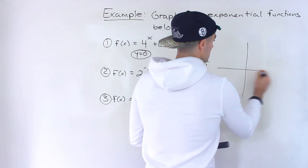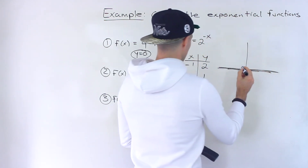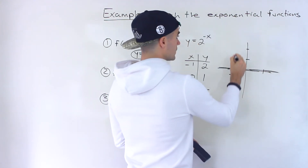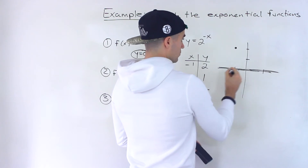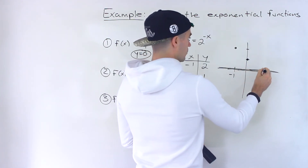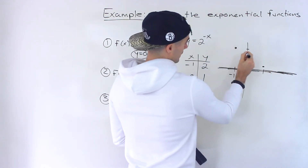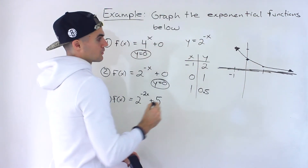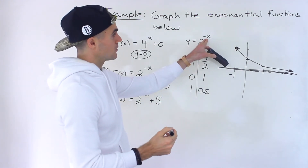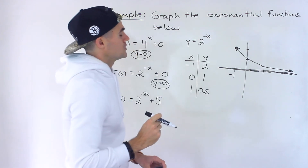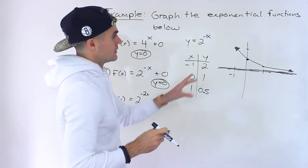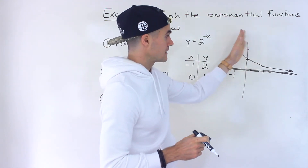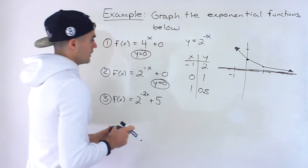Graphing these values with the horizontal asymptote at y = 0, we plot negative one and 2 up here, zero and 1 here, and one and 0.5 over here. Connecting these, the graph looks different from the standard exponential function because of the negative exponent. It's like reflecting 2^x — which has the same shape as 4^x — in the y-axis, to get this shape.